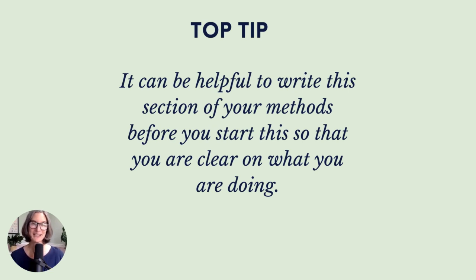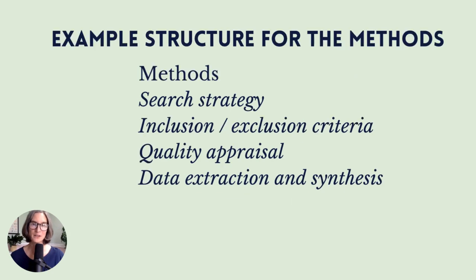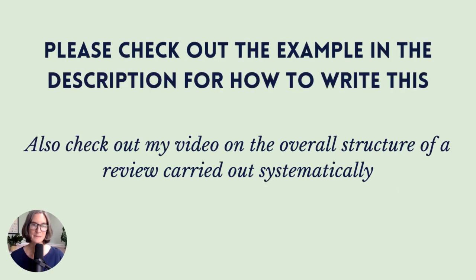A top tip: it can be really helpful to write the methods section of your review before you start screening so that you're really clear on what you're doing. The methods section will likely have subheadings of: search strategy, inclusion/exclusion criteria, quality appraisal, data extraction, and synthesis. Check out the example in the description and my video on the overall structure of a systematically carried out review for more detail on what to include.